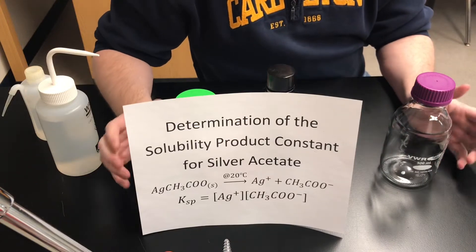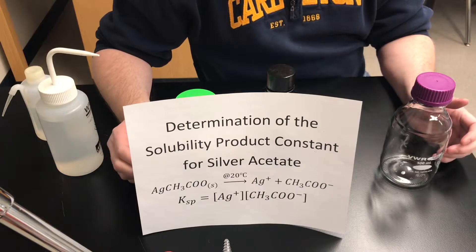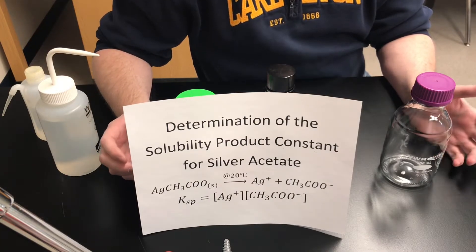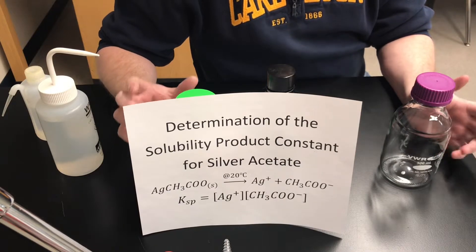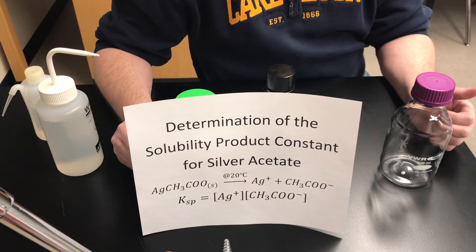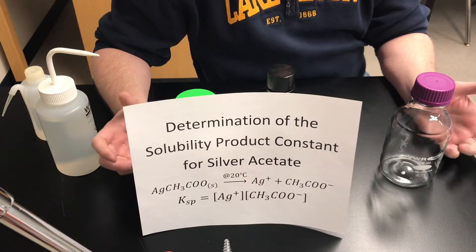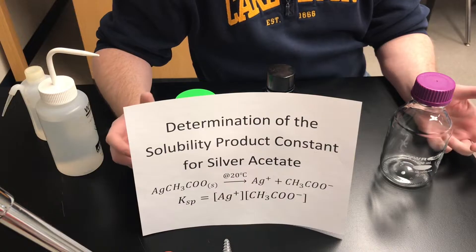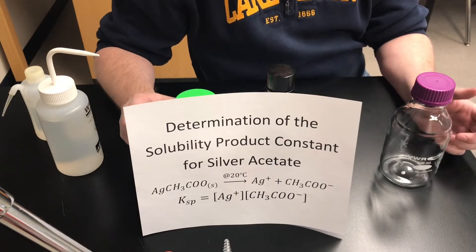Welcome to another laboratory video. This one is appropriate for grade 12 chemistry or for an AP chemistry class where you're studying solubility equilibrium. We're going to determine the solubility product constant, the Ksp value, at room temperature for silver acetate. Silver acetate is a moderately soluble salt and should have a pretty large Ksp relative to some other salts. We're going to determine that in an indirect way.